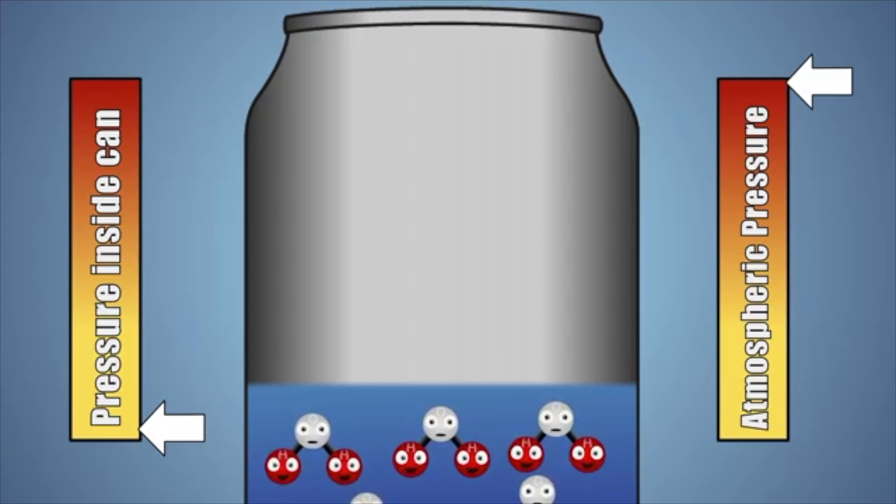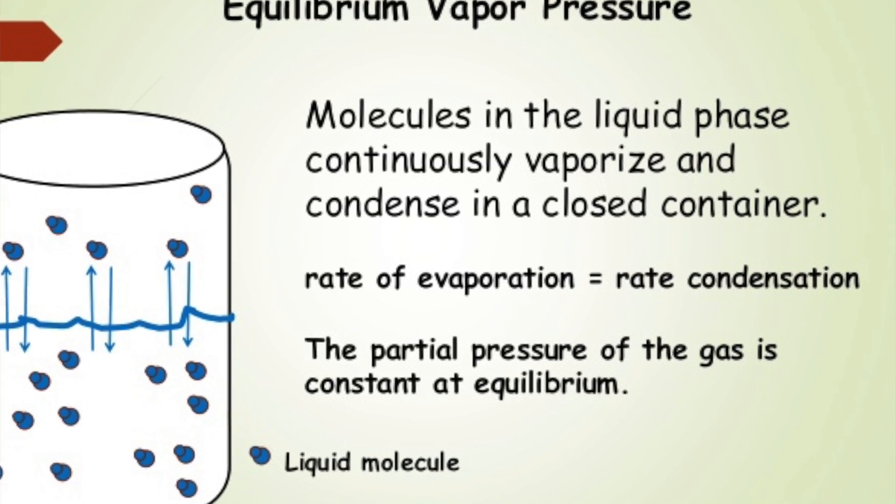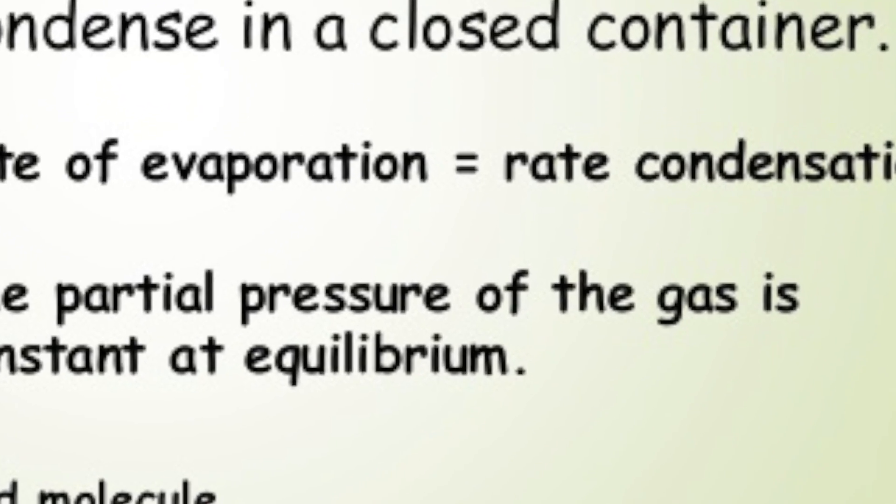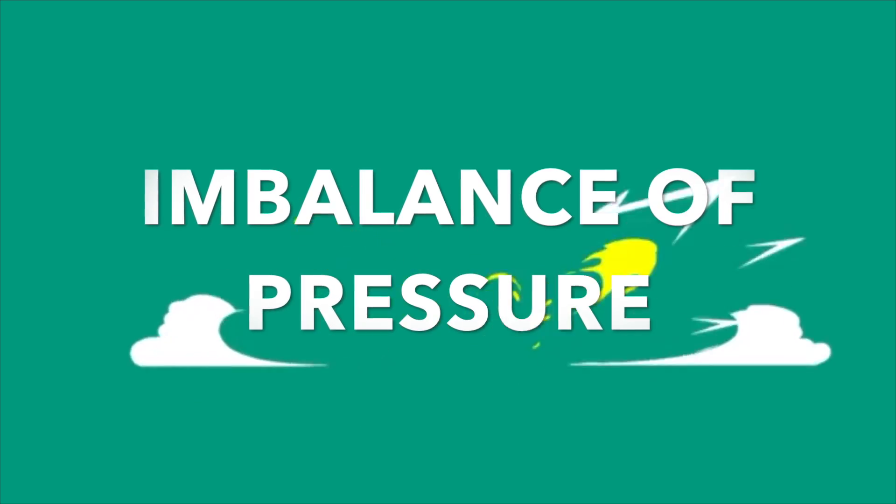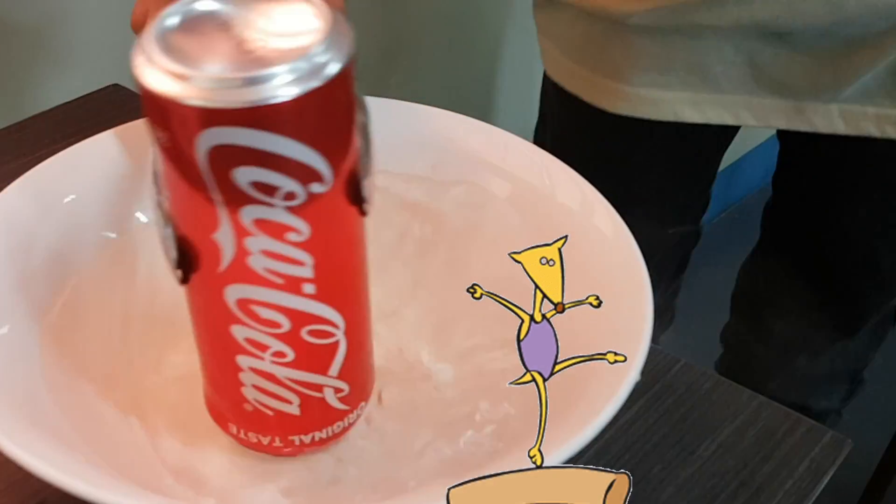At this point in our experiment, the pressure outside the can is much higher compared to the pressure inside. And in nature, pressures want to be in equilibrium. The imbalance of pressure inside and outside is what caused the can to collapse, creating a balance of pressure.